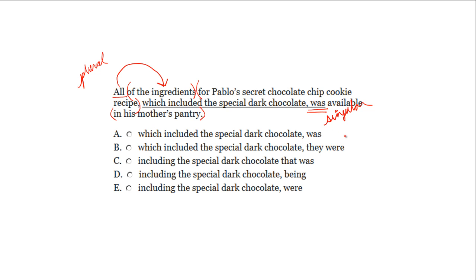The sentence should have the verb 'were.' Let's go through the answer choices and cross off any that use 'was.' Looking at B: 'all of the ingredients, which included the special dark chocolate, they were available' — there's a problem because the subject is 'all' and if you choose B, then 'they' becomes the subject. Looking at D: 'all the ingredients including the special dark chocolate, being available' — 'being' is not a verb. The correct answer is: all the ingredients including the special dark chocolate were available.